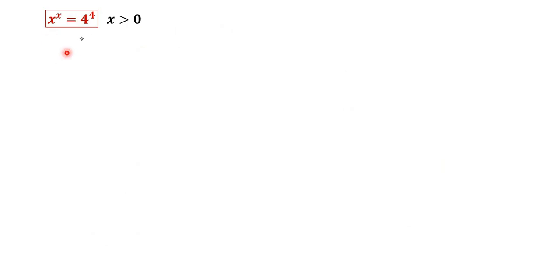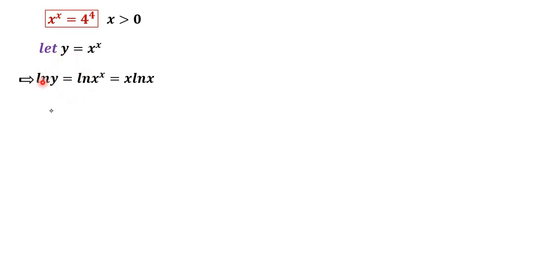We set up the function y = x^x and apply logarithmic differentiation. Taking the natural log of both sides gives ln y = ln(x^x). Applying the logarithm rule ln(a^b) = b·ln(a), we convert this to ln y = x·ln x.